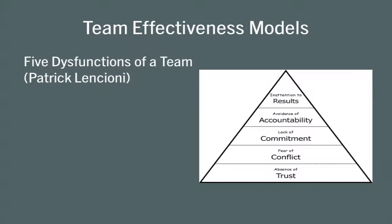If you go to Amazon or Barnes & Noble and look up books on team effectiveness, the book 'Five Dysfunctions of a Team' will likely show up. Similar to the GRPI model, it's shaped like a pyramid, but focuses on different things. This model starts with the premise that if you don't have trust, you can't have a high-performing team. Absence of trust creates a fear of conflict, and without that, there's no commitment or accountability to get the desired results. In the positive sense: trust enables working through conflict, which leads to commitment, then accountability, and finally results.